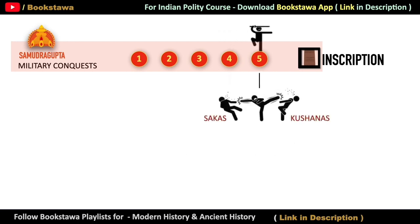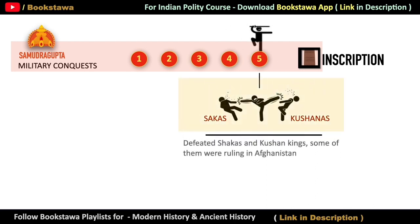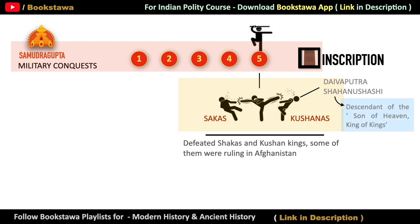Shakas and Kushans have been placed in the fifth group. These were the states which were ruling in some scattered areas after the Shaka and Kushan dynasties were over, especially some states that used to belong to foreign territories. There was such a foreign ruler who had given himself the title Daivaputra Shahana Shahi, which indicates he must have been a descendant of the Kushan dynasty. Samudragupta defeated all these rulers and kept them under his suzerainty, making them tributary states as well.